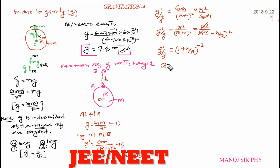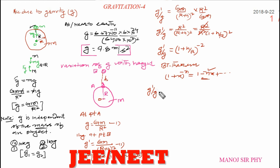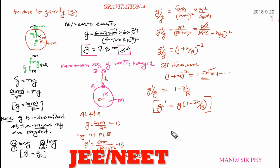Now apply the Binomial theorem: (1 + x)⁻ⁿ ≈ 1 − nx (neglecting higher-order terms since h/R is small). Applying this: g' / g = 1 − 2h/R, and finally g' = g(1 − 2h/R). Remember this formula whenever you are dealing with height — up to 100 km, 1000 km, there are different variations to consider.